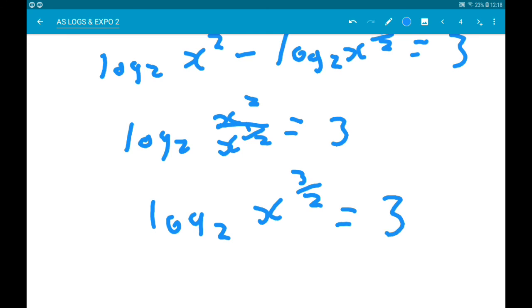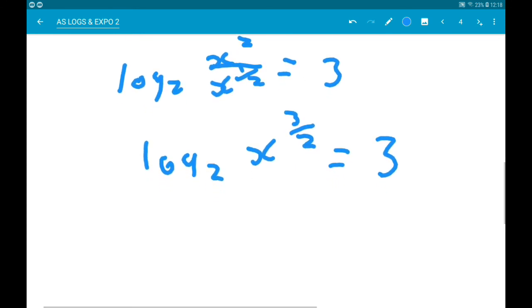Now to get rid of the log, we now need to raise both sides to the power of 2. So we will get x to the three halves is equal to 2 to the power 3.